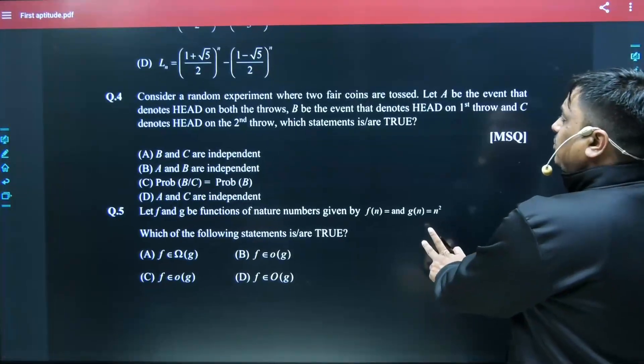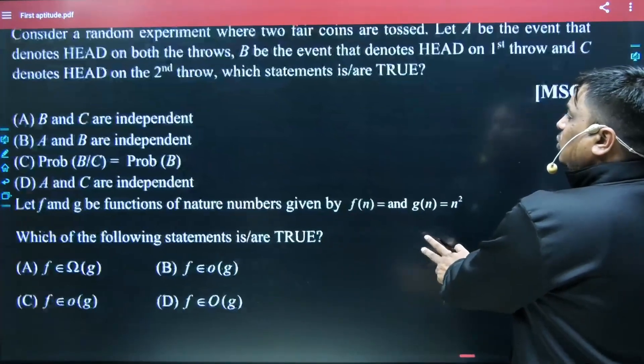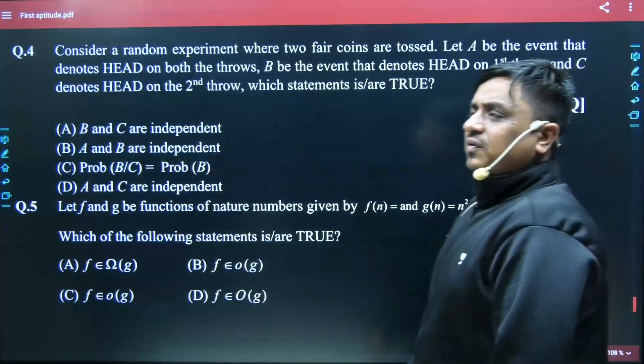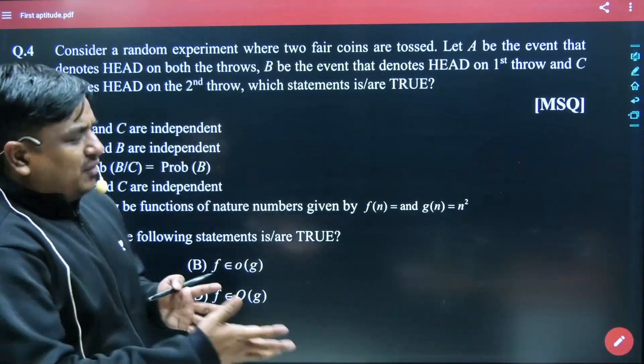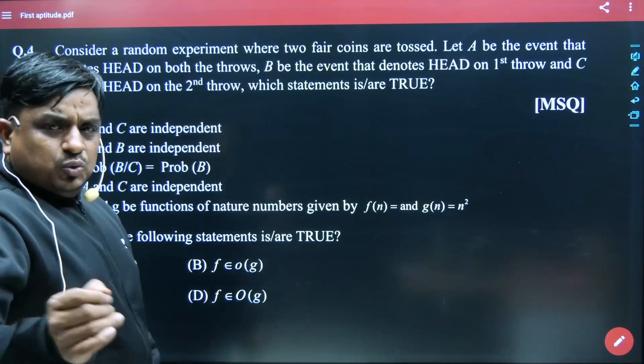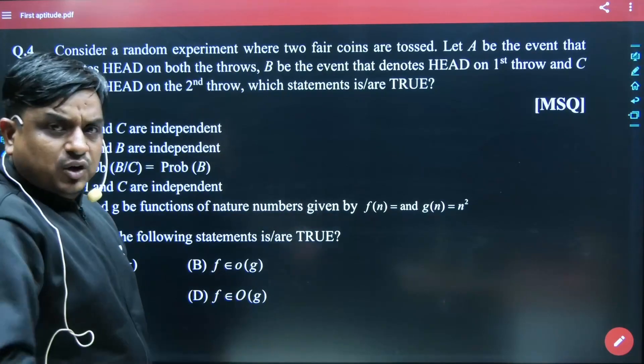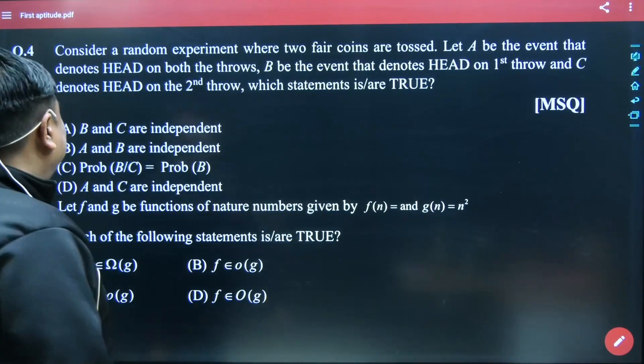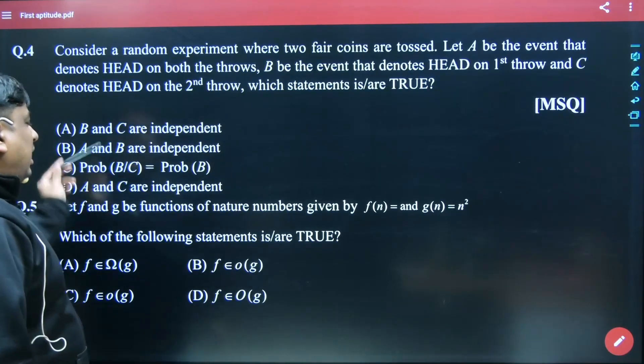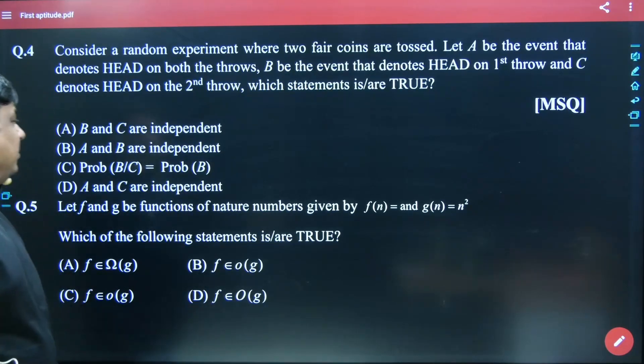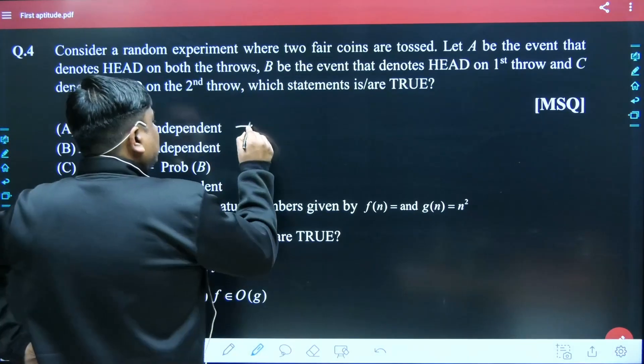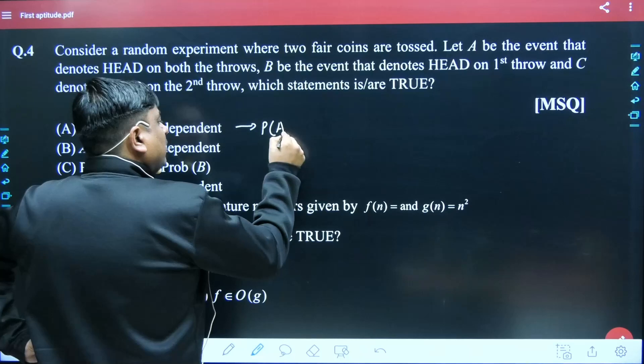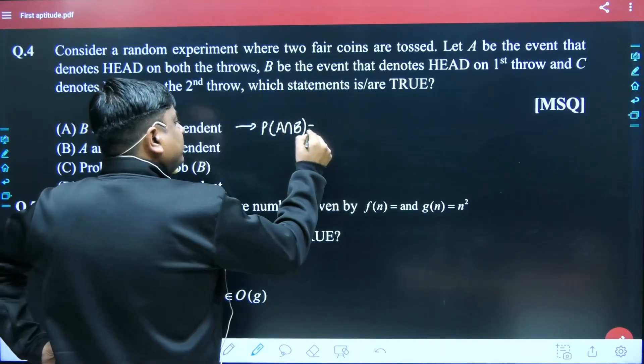Here this has been a problem based on probability. Most of the time we get a problem where we need to find the probability, but here they had given it a bit differently. Two coins are being tossed, total four sample spaces are framed, and they asked out of this how many options are correct—again an MSQ. You have to use the formula: if P(A ∩ B)...